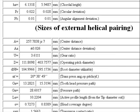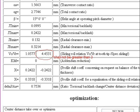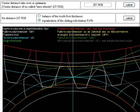Sizes of external helical pairing. Sliding speed must be not greater than three times roll speed. Matching on the screen.